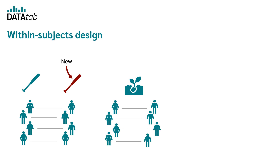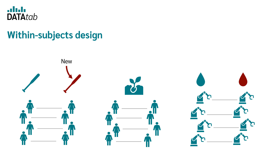It doesn't even have to be the same person. For example, if you wanted to find out whether in a couple, women do more gardening than men do, you would also have a within-subject design. And it doesn't have to be about people — you could also investigate whether a lubricant has an influence on the downtime of machines, measuring values with the old and then with the new lubricant. The data is then also available in pairs.